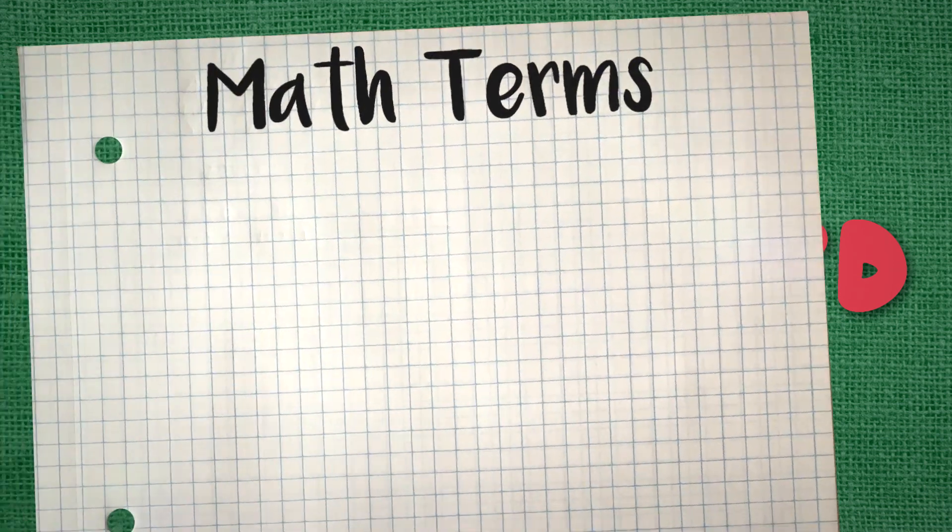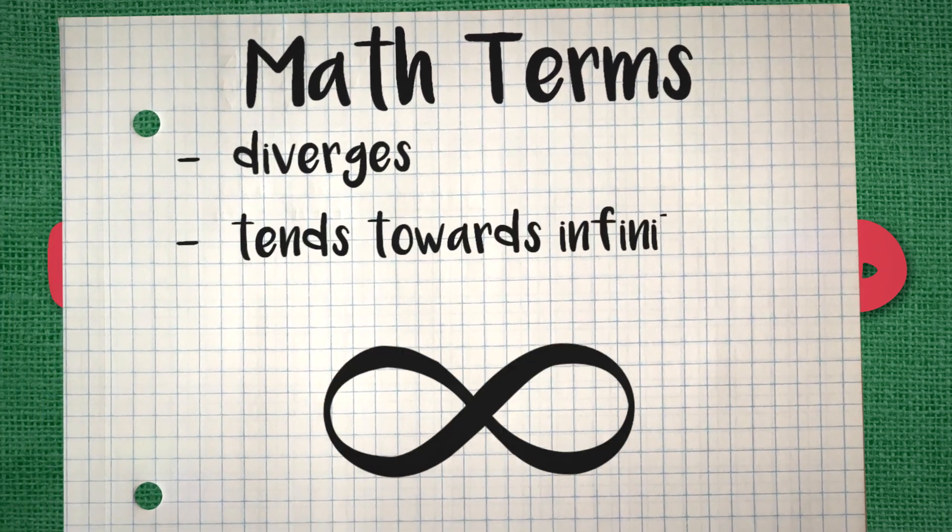When this happens, we can call that iteration unrestricted, or in mathematical terms, it diverges and tends towards infinity.